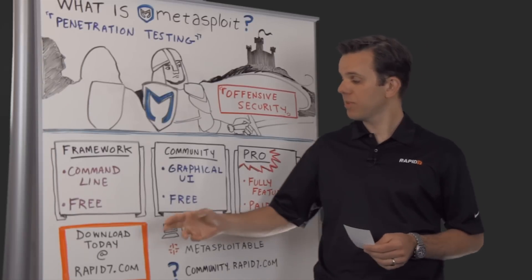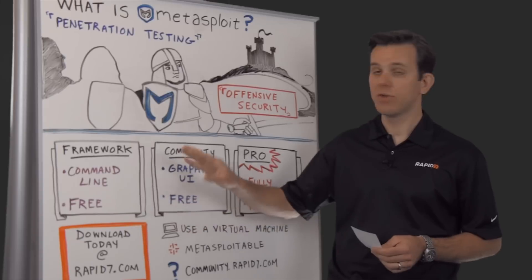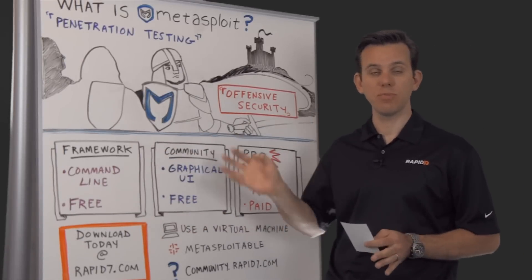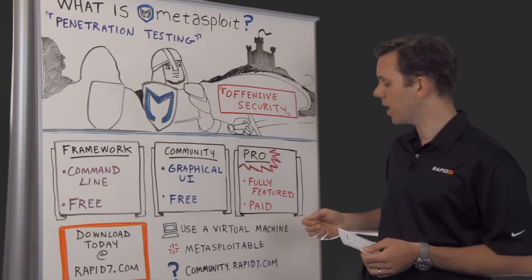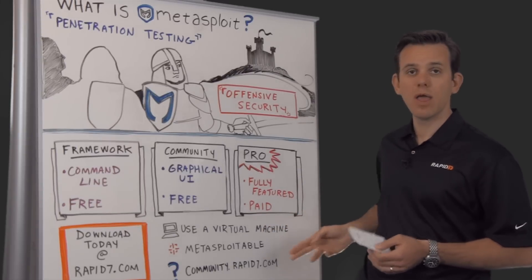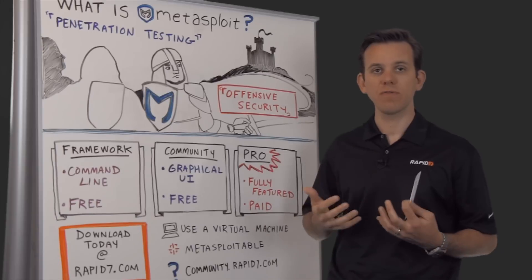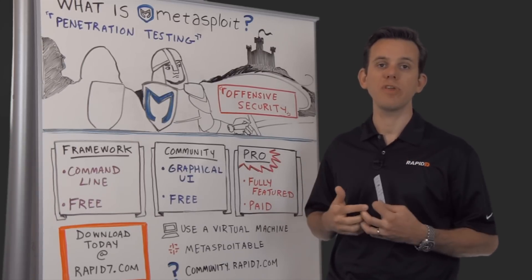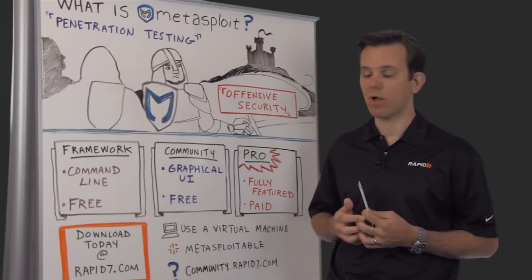You can download Metasploit at rapid7.com. The download includes all three editions, so you don't need to choose before the download — you'll be prompted halfway through when you're inside the UI. I do recommend that you install it on a virtual machine, because Metasploit's techniques conflict with firewalls and antivirus solutions, so you should use a machine where you can safely switch off antivirus and your firewall.